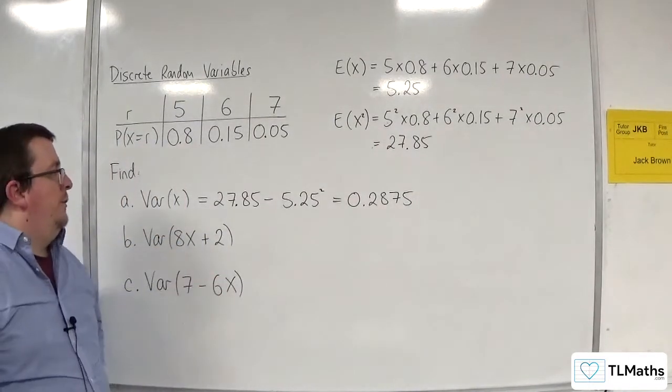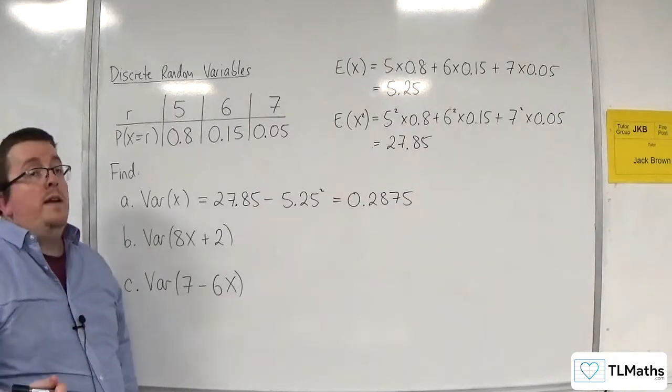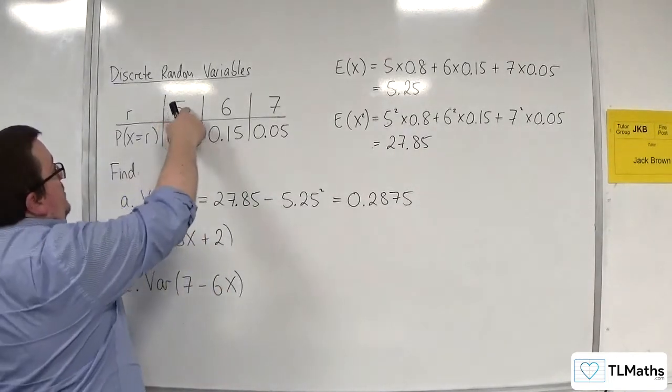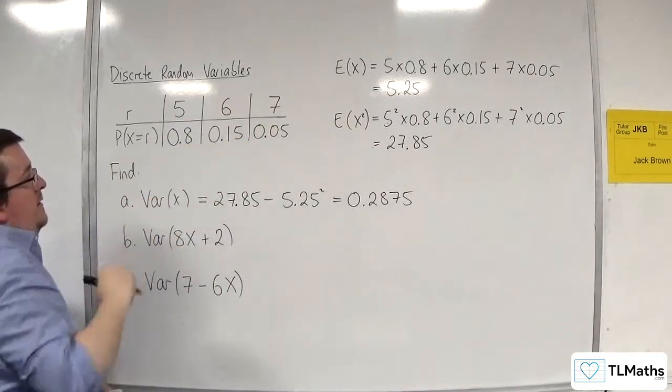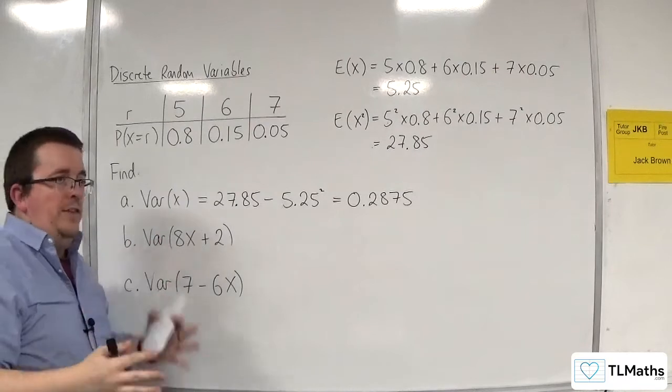Now we want var of 8x plus 2. The long-winded way would be to substitute 5, 6, and 7 into here, and then work out E of x and E of x squared again from that. I don't want to have to do that.